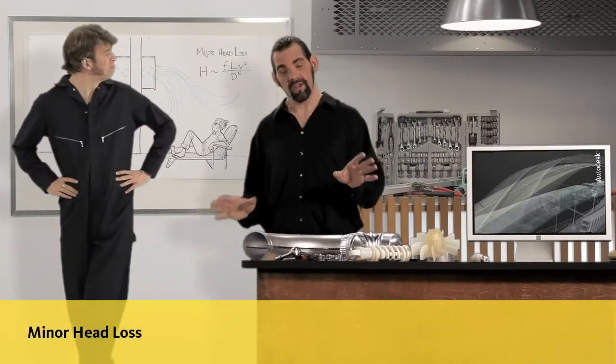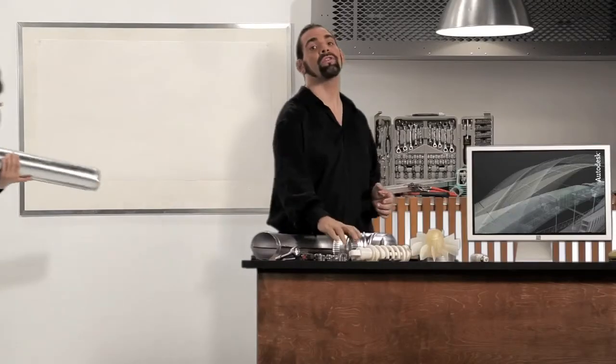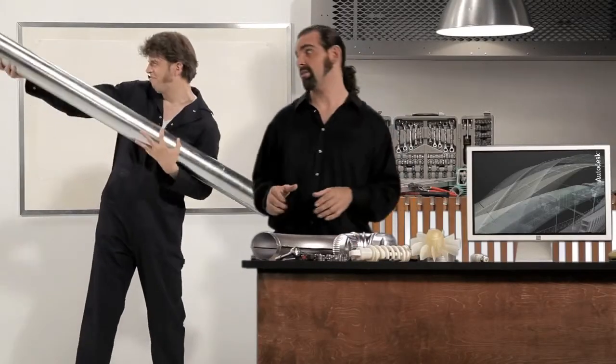Minor head loss, despite its name, can really add up, too. An air duct this size going around a sharp bend like this is equivalent to going through a much longer straight pipe like this.